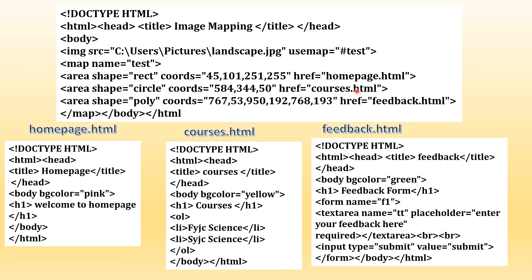You also have to write the local pages. For homepage.html, you don't need too much — just an H1 and a different background color. For courses.html, give a different background color, an H1, and an ordered list to show courses. For feedback.html, give an H1, background color, and optionally a form with a text area. Just an H1, background color, and a paragraph is enough.